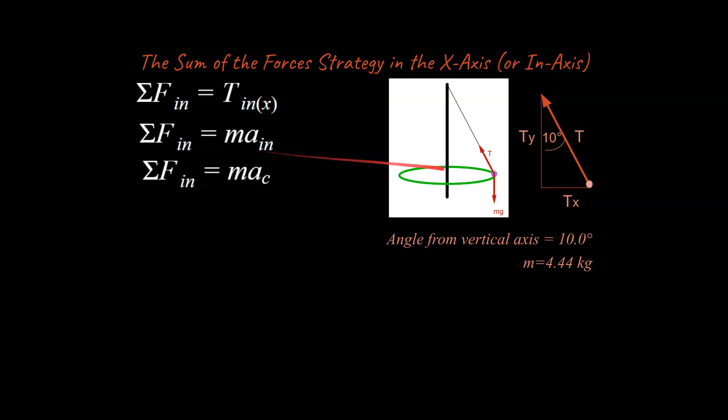And the second line for the sum of the forces strategy is to say the sum of the forces is equal to mass times acceleration in that axis. At this stage, we can go ahead and recognize this is going to be moving in a circular path. So I'm going to go ahead and call this centripetal acceleration. That's a really important step. Actually, you can do this now or you can do this one step later. In either case, you're going to say that inwards acceleration right here is centripetal acceleration. So that's a modification of the sum of the forces strategy.